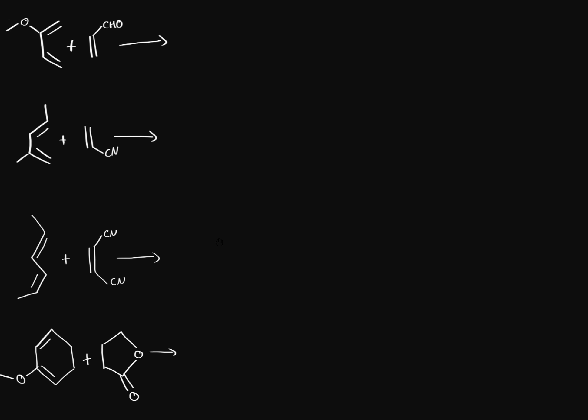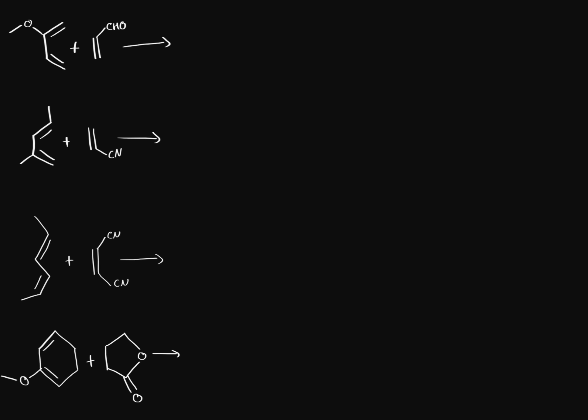What about these four different examples? We have different groups, different electron withdrawing groups, different electron donating groups, and we don't know how they're going to orient themselves. There are a few things we want to look at. The first thing is important resonance contributors — those are going to help us figure out which carbon is the most reactive for the dienophile and the diene.